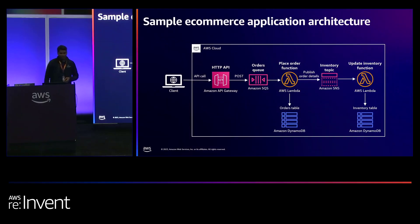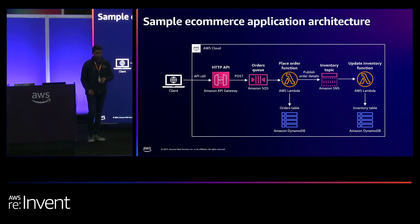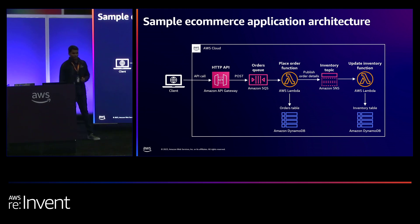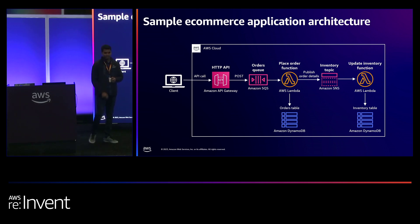AWS SAM is an open source framework to build a resilient serverless architecture as infrastructure as code in the AWS Cloud. With just a few lines of resources, you should be able to architect the system you want and model it using the YAML syntax. For this demo, we have a simple application architecture of an order management system using API Gateway, SNS, SQS, and Lambda.